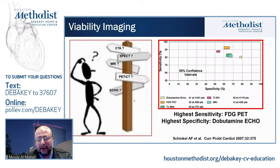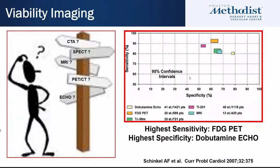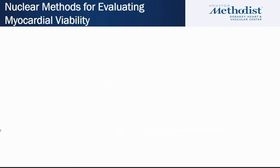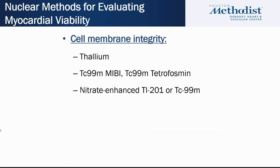There are multiple techniques available. From a meta-analysis published nearly 15 years ago, nuclear techniques showed high sensitivity compared to dobutamine echo, which has higher specificity. Nuclear techniques — especially FDG PET — showed the highest sensitivity for assessment of myocardial viability. I'll touch briefly on SPECT techniques, which are still used in practice and heavily tested on boards, particularly for the fellows.